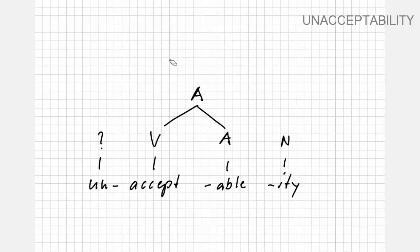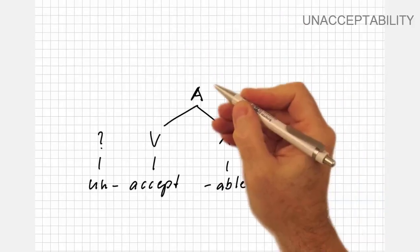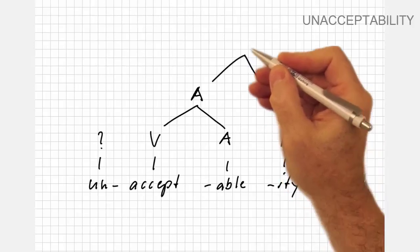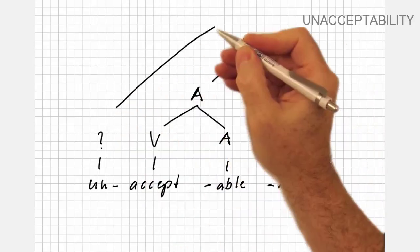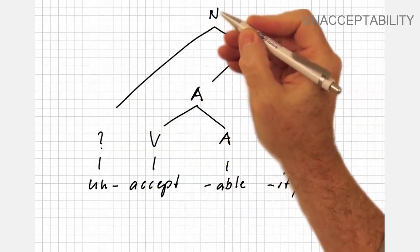Let's now look at the second option. This option first generates the noun acceptability and then attaches the prefix un- to this new nominal stem.